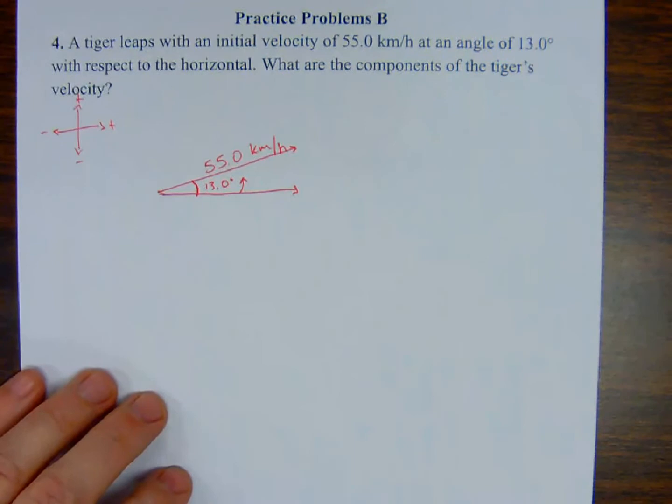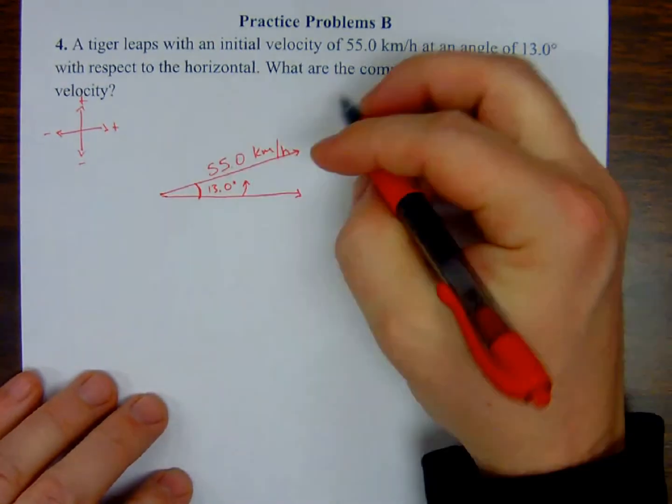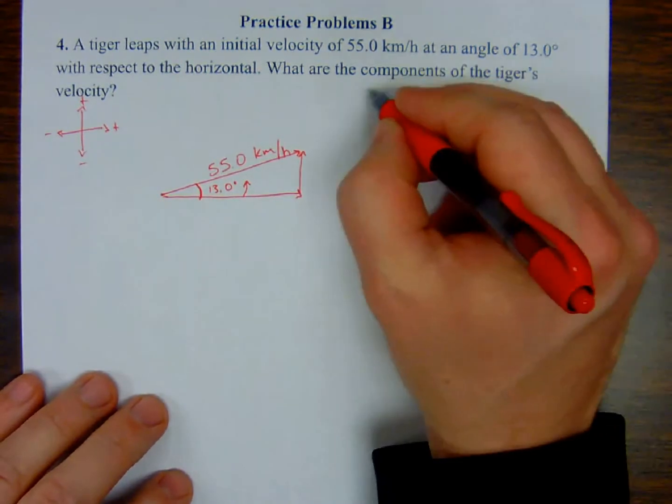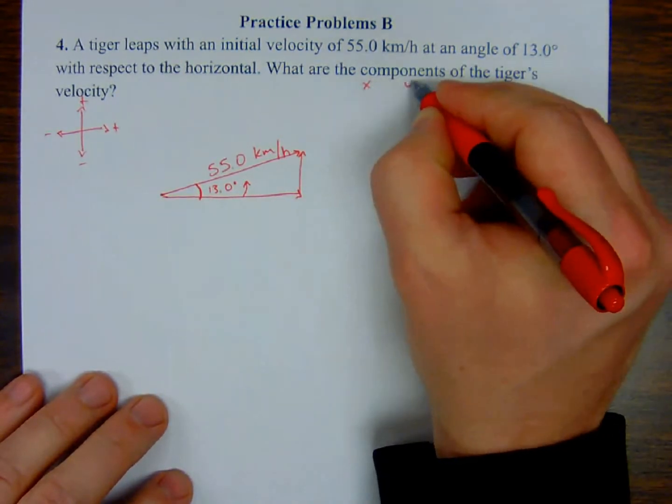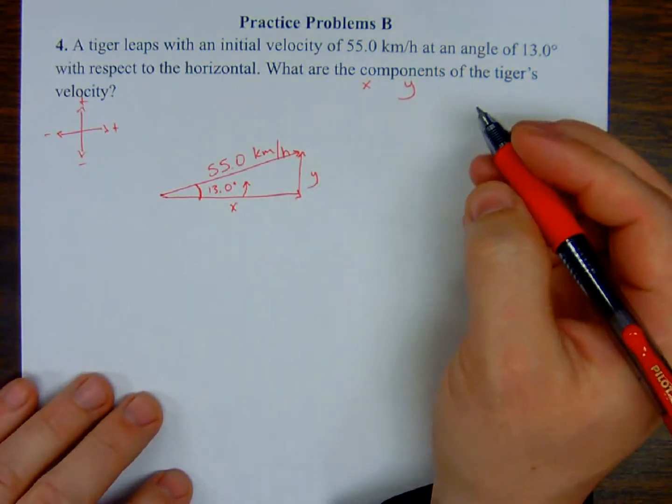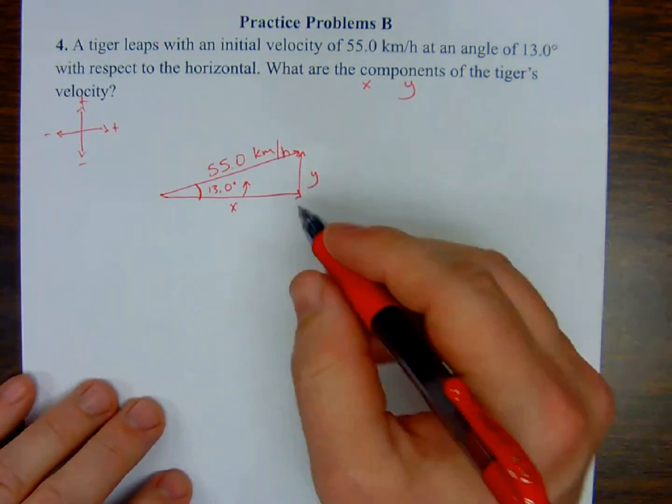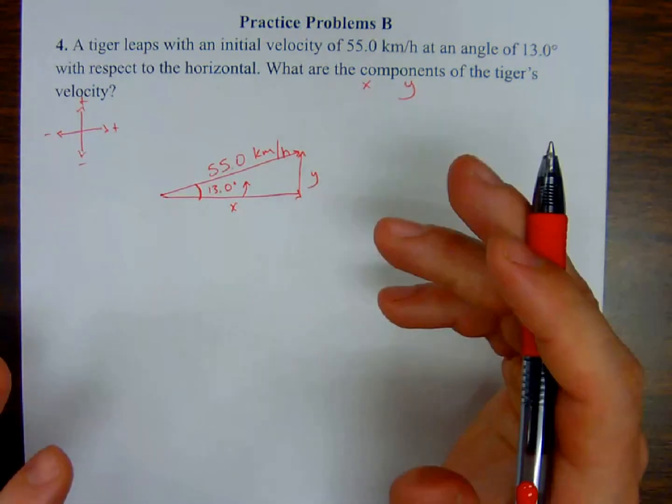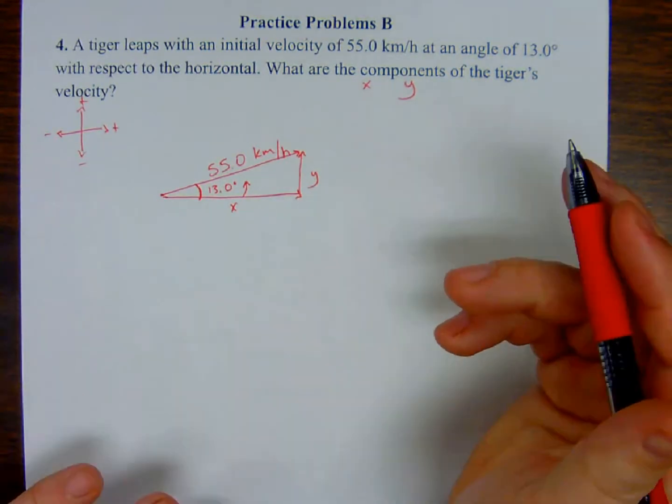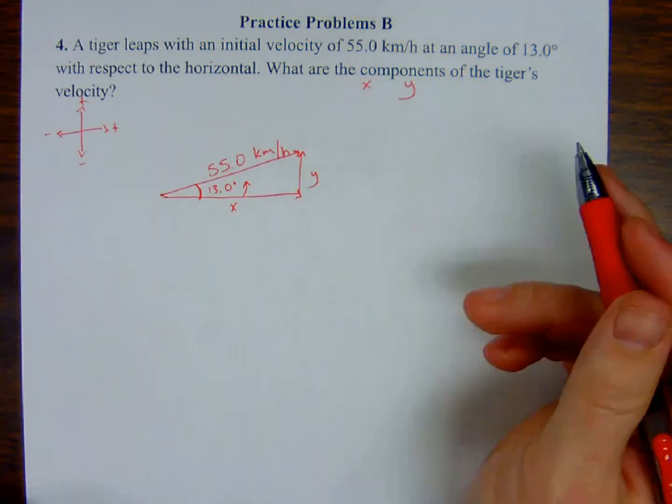We are being asked to solve for the components x and y. So here's my x, here's my y. The question here is when I set this up, should I use sine or cosine? Well, what are your rules for sine and cosine? SOH-CAH-TOA.